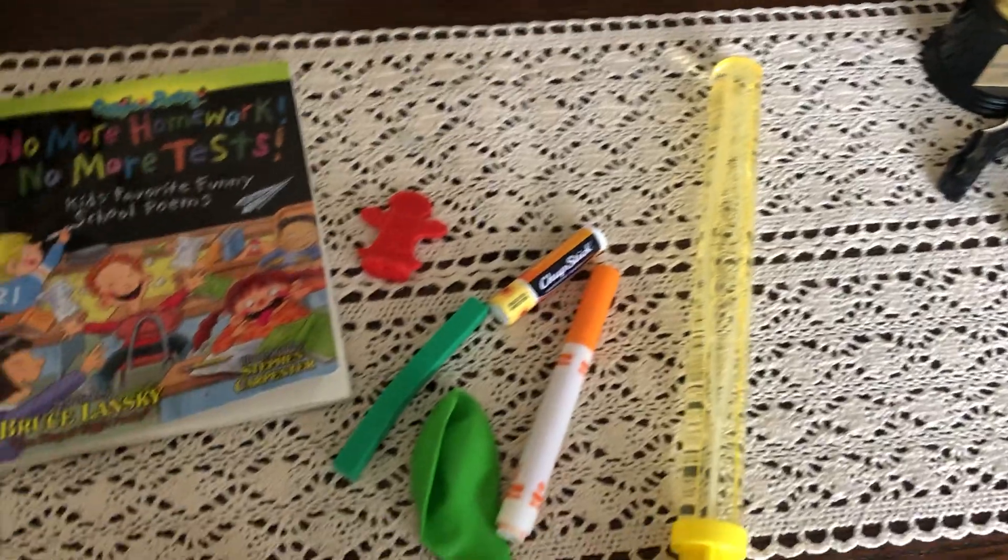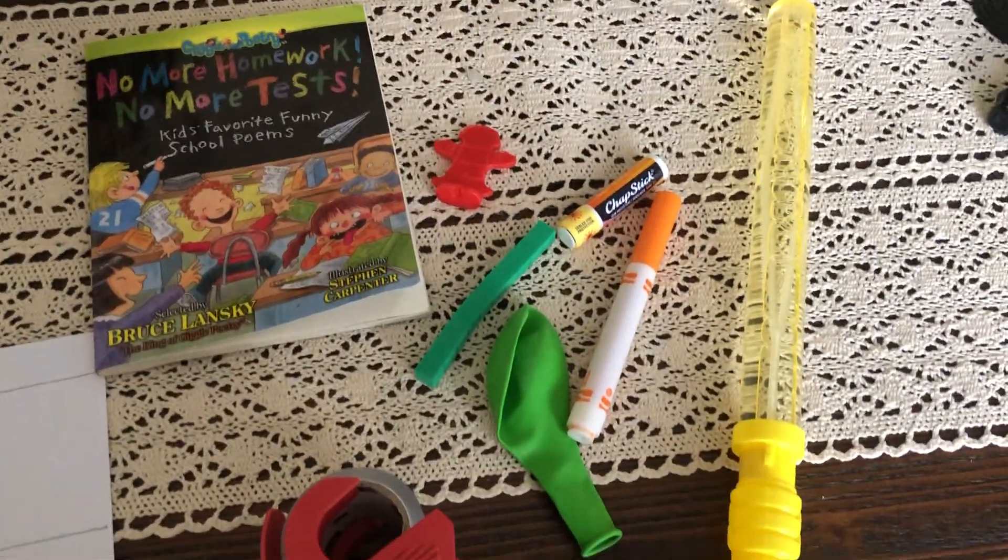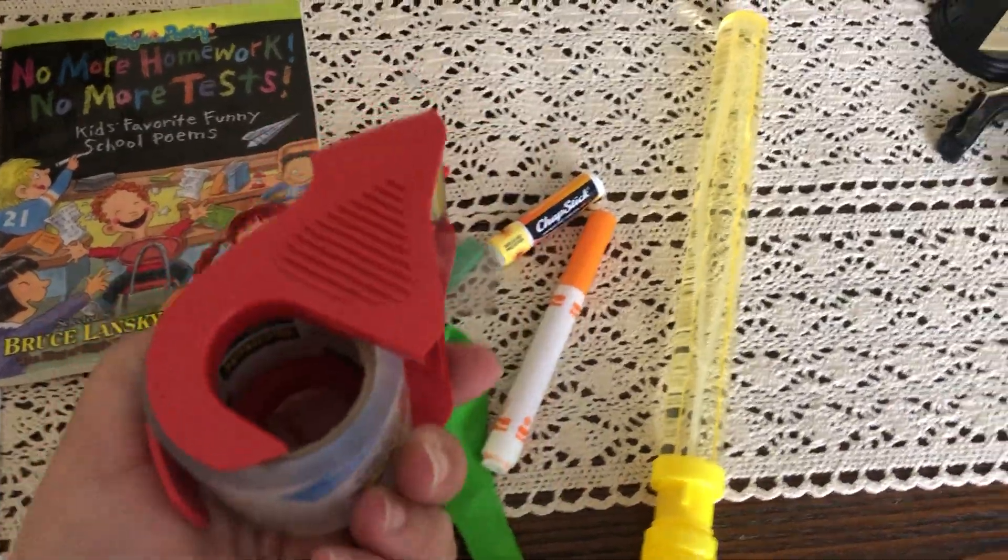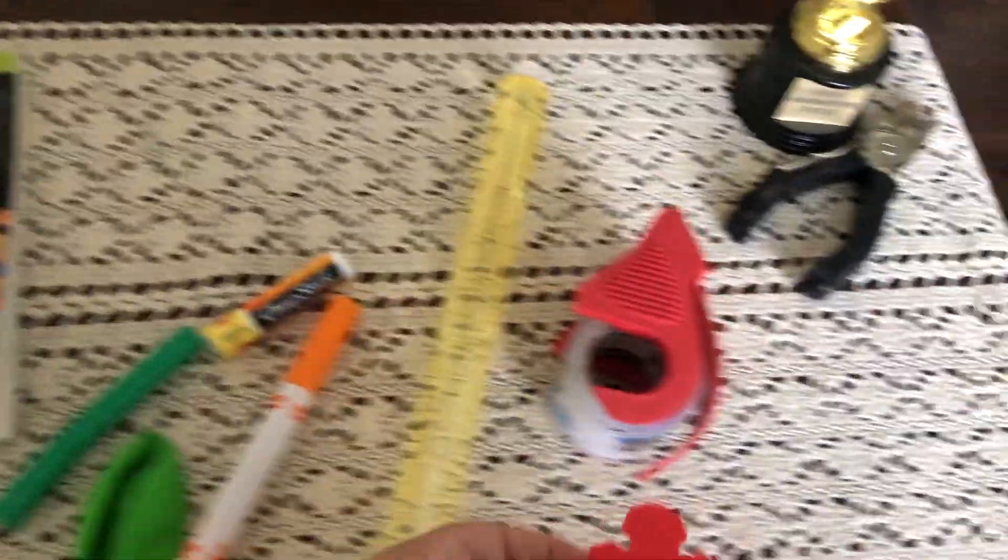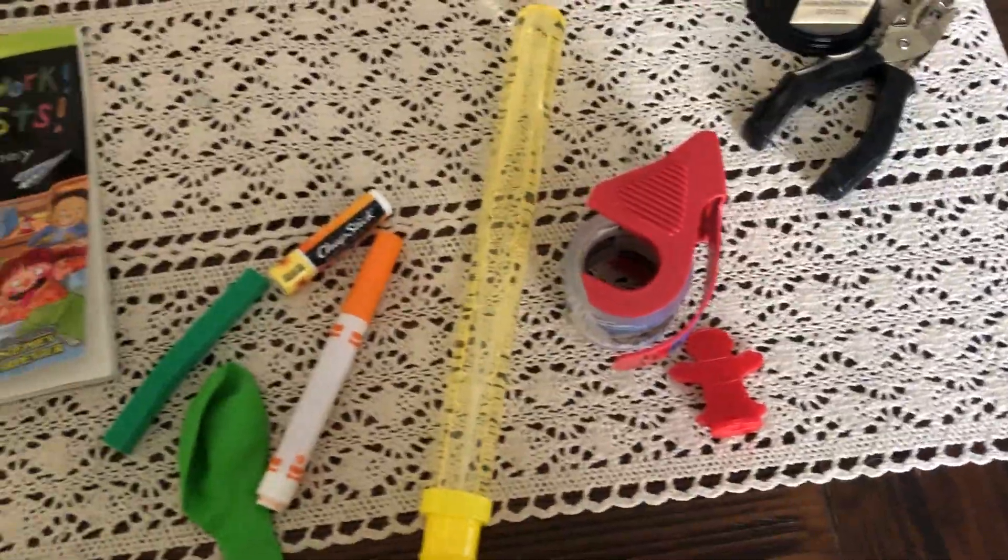Now let's look for different colors that I could sort together. I see my roll of tape is red and then my little Candyland piece is red, so I'm going to sort those together.